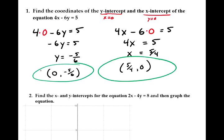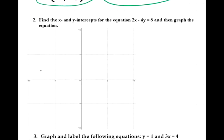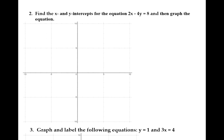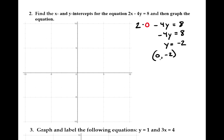Our ordered pair for the x-intercept is (5/4, 0), a point that contains the number 0. Now for number 2, we're going to do the same thing but go a step further and use the intercepts to graph the equation. We plug in 0 for x to find the y-intercept: 2 times 0 minus 4y equals 8, so negative 4y equals 8, giving us y equals negative 2. The y-intercept is the point (0, -2), so we go down 2 on the y-axis.